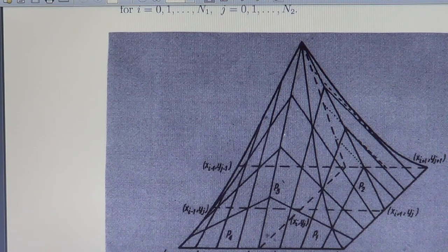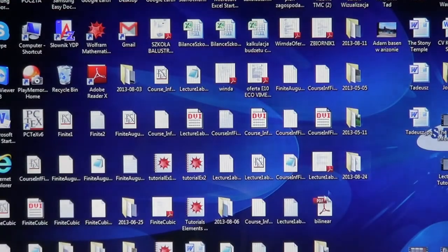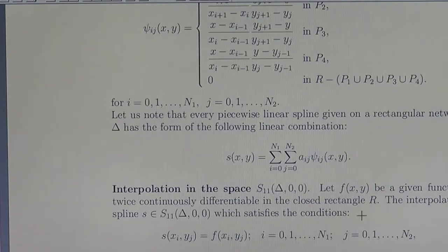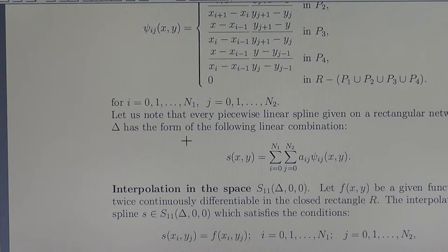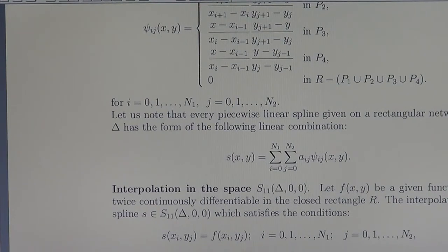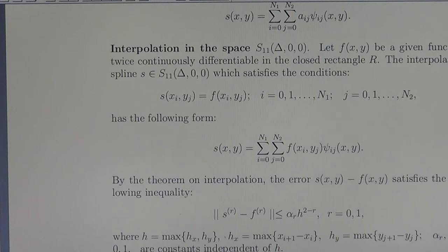Let us come back to the previous text. Every spline from the space S_{1,1}(delta, 0, 0) can be presented as a linear combination of the coordinates Psi_{i,j}. Now, the interpolating problem in the space S_{1,1}(delta, 0, 0).